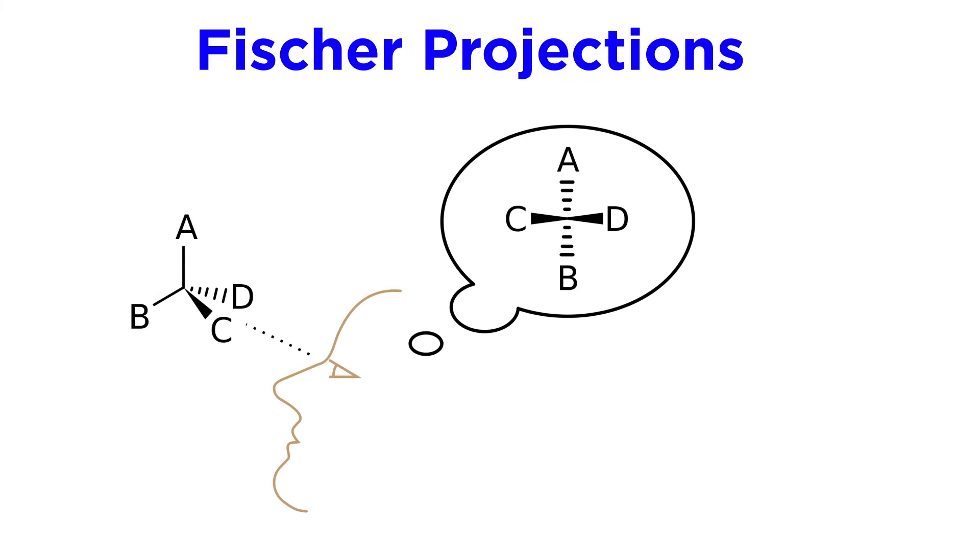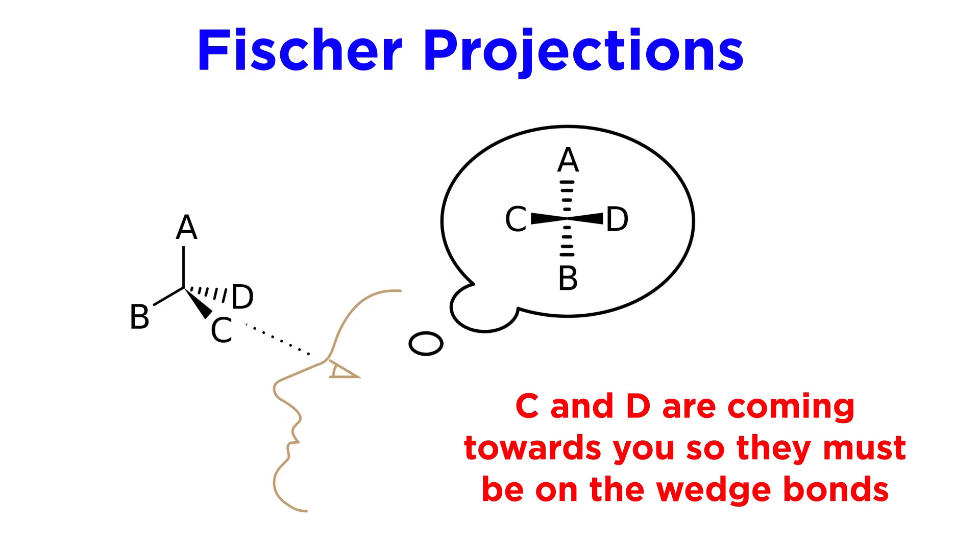Fischer projections are just a different way of visualizing a molecule, which we can see if we draw this molecule in line notation and view it from the side. The Fischer projection is what we would see if we were in the plane of the screen, looking directly at the chiral center.